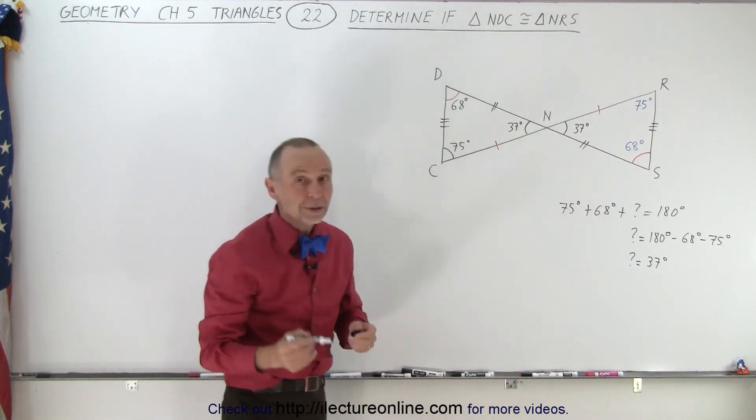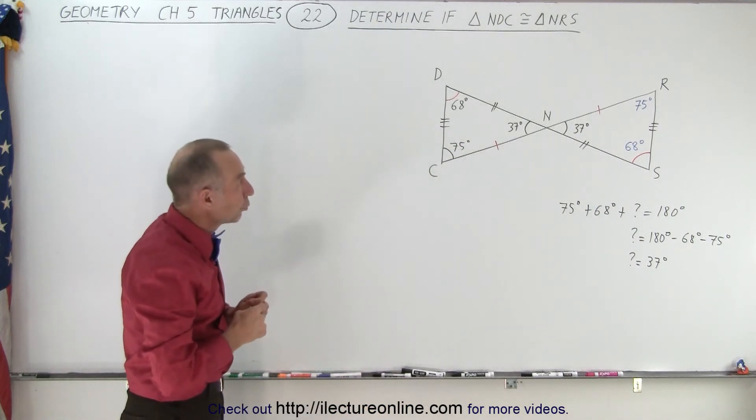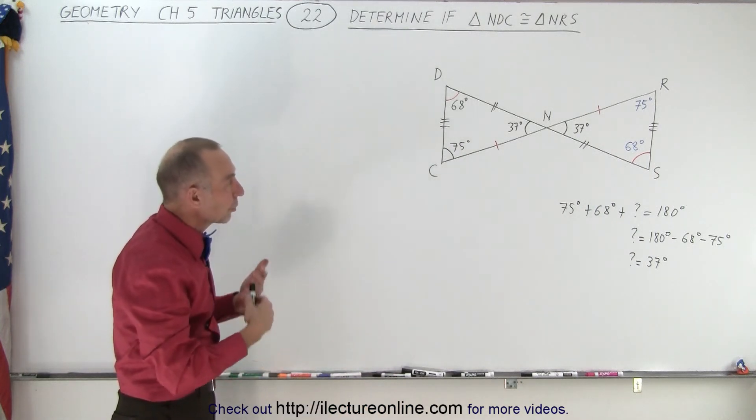Which means that this must equal this, and this must equal this in length. And so therefore, we can then determine that yes, indeed, both triangles are indeed congruent triangles.